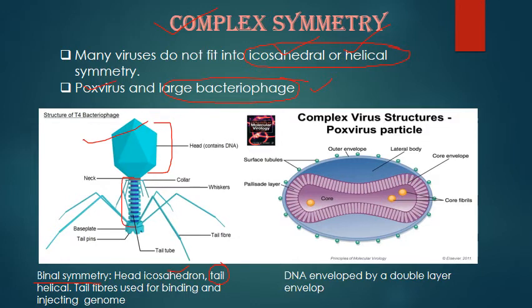The tail fibers are used to make a grip on the bacterial surface and help in injecting the genetic material — that is, the genome — into the bacterial cell. The second example is the complex virus structure, which is the pox virus.